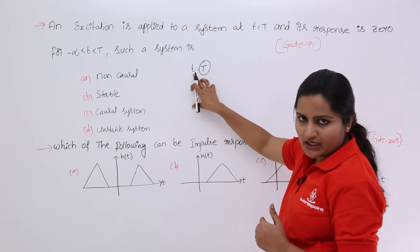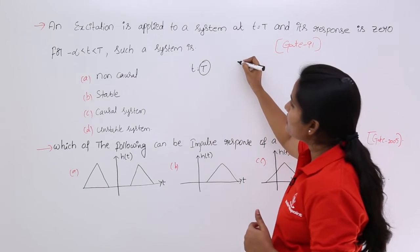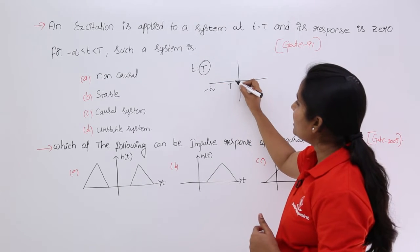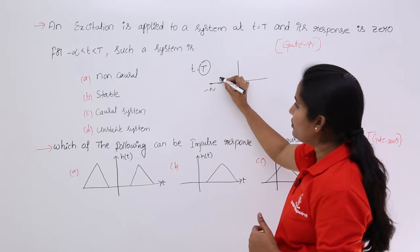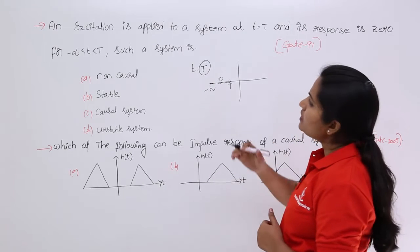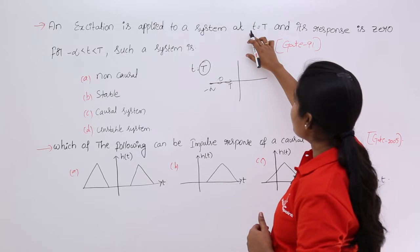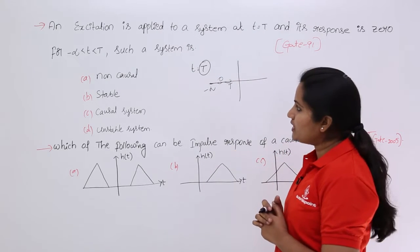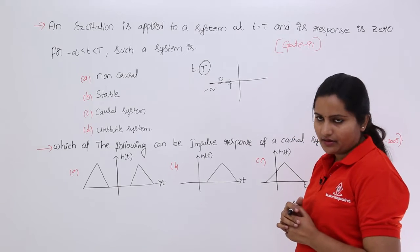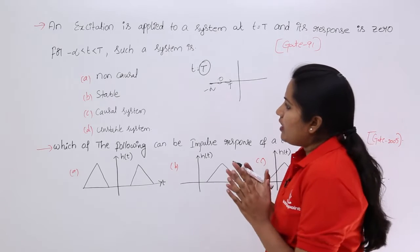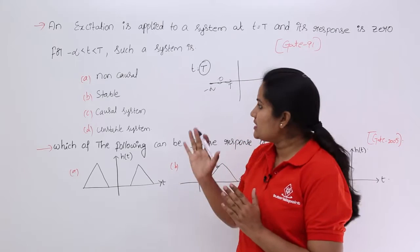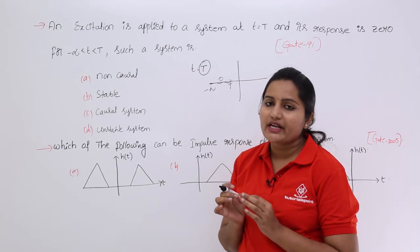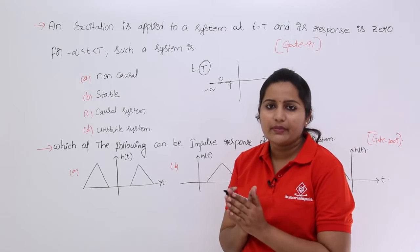Here our present input is t and the system response from minus infinity to t is considered as 0. An excitation is applied at t equal to t and its response is 0 for minus infinity to t. This is a causal system — the system response depends upon only the present input.